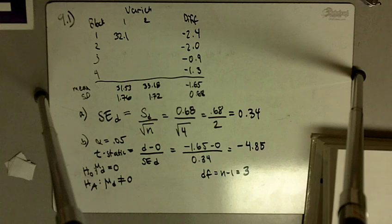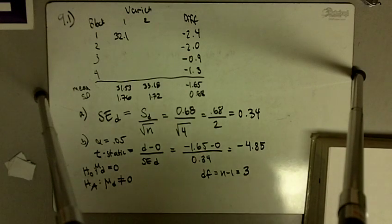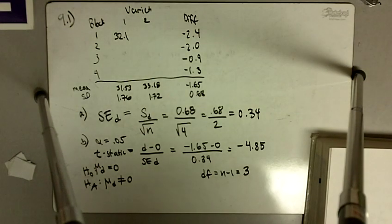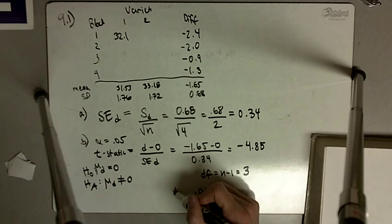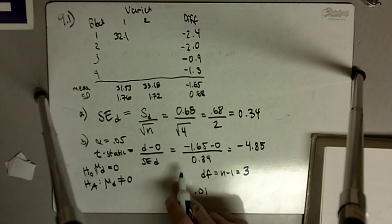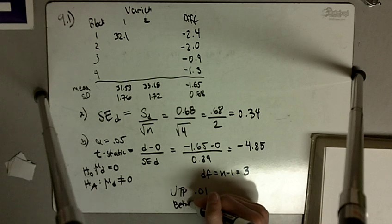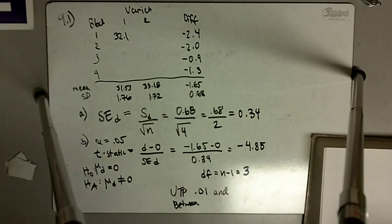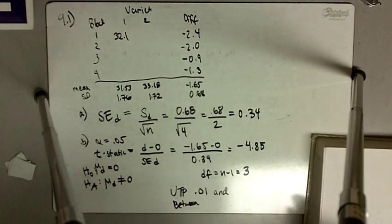So we go to the back of the book and look for 3 degrees of freedom. We see that 4.85 falls between the critical values for 0.01 and 0.005. So the upper tail probability is going to be between 0.01 and 0.005.